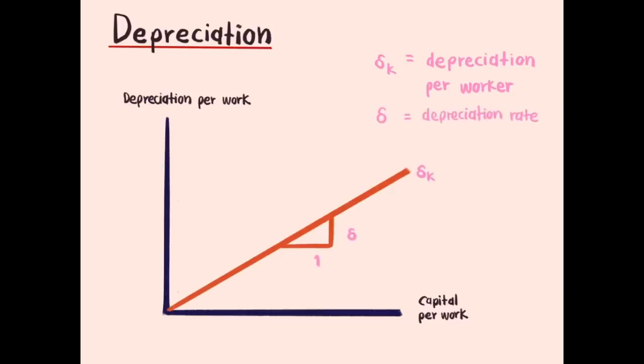Depreciation is delta K. Depreciation per worker is delta small k, where delta is the rate of depreciation that has value between 0 to 1.